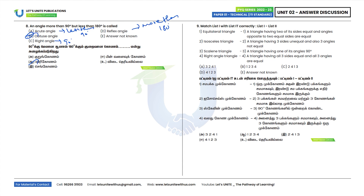Ninth question, match the following: Equilateral triangle — all three sides equal and all three angles are equal. Isosceles triangle — two sides equal and angles opposite to the two sides are equal. Scalene triangle — all three sides are unequal and all three angles are unequal. Right angle triangle — a triangle having one of its angles equal to 90 degrees. So options 4, 1, 2, 3 — Option D is the correct answer.